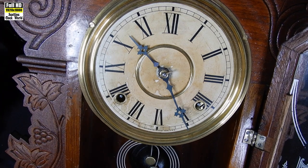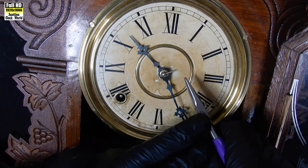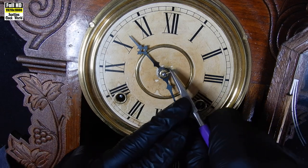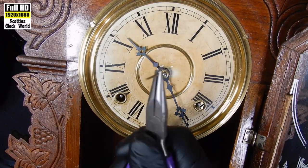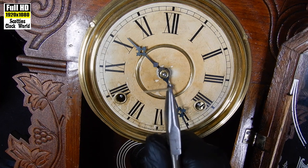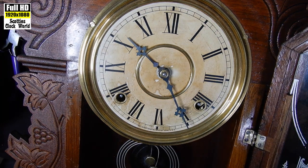The first thing we do before we can do any work on a clock is we have to remove the hands. We'll notice here that there's a brass pin, tapered pin, that holds the hands on. I'll take that out first.